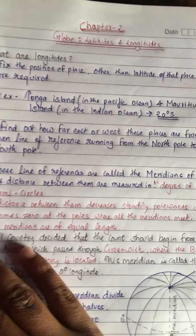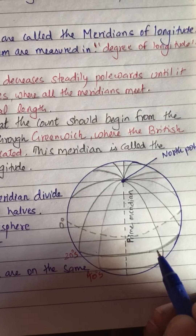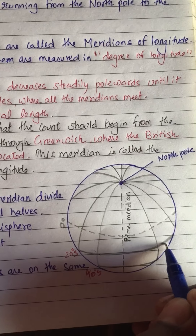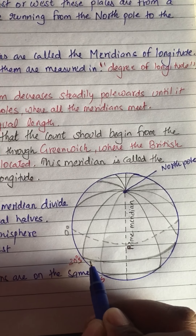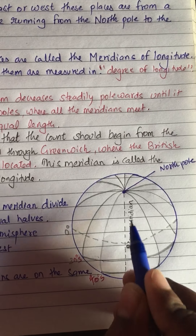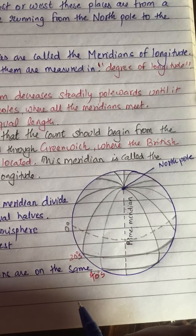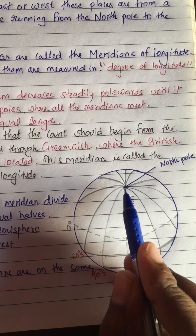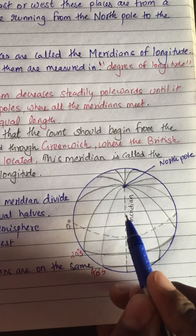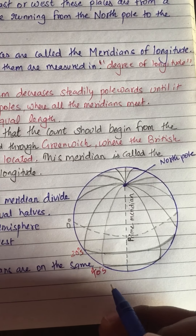To find out, we need to determine how far east or west these places are from a given line of reference. This line of reference joins the north pole and the south pole. So we have to define a line of reference which enables us to know how far east or west these points are.